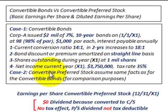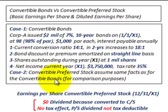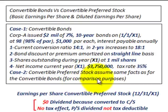For case two, we're going to look at convertible preferred stock and assume the same facts as the convertible bonds example, just for comparison purposes, to understand the difference between convertible preferred stock and convertible bonds when determining diluted earnings per share and basic earnings per share.